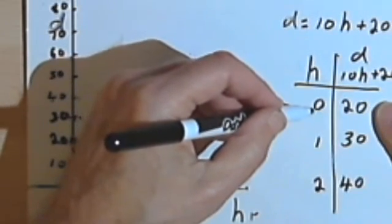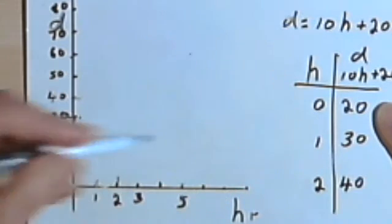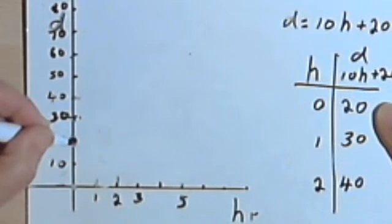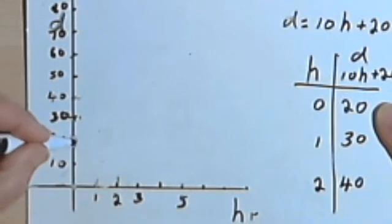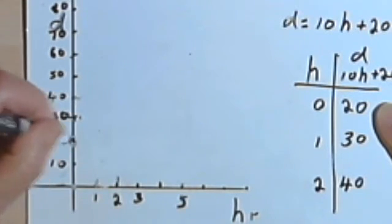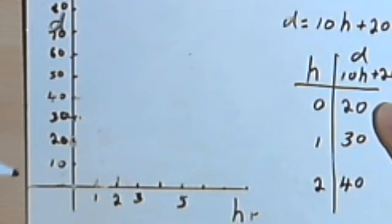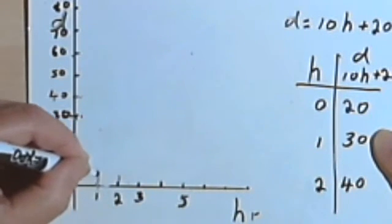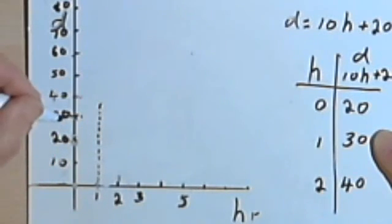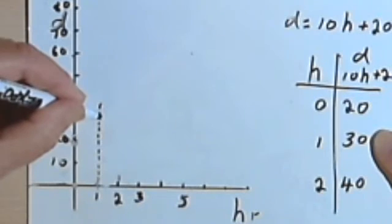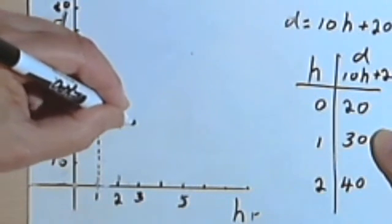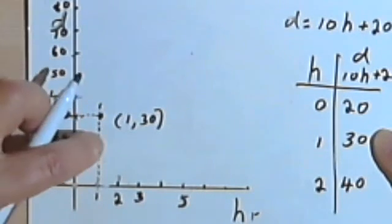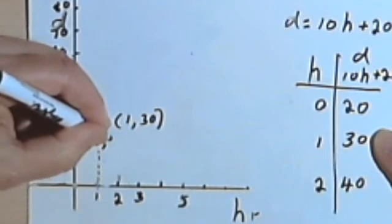So the first pair of numbers we have is 0 and 20. 0 is going to be an h-value. 0 is right here. And 20 is going to be a d-value. So that gets me right to this spot here. I'm having trouble marking it. Let's do the 1 and the 30. Here's my 1. So I want to go up from the 1. And here's my 30. So I'll go across. So this point here is going to be 1, 30. I forgot to mark this. Let's make some space. This is 0, 20.